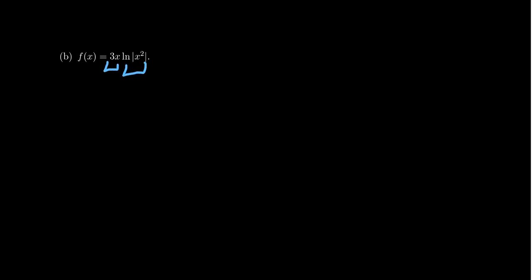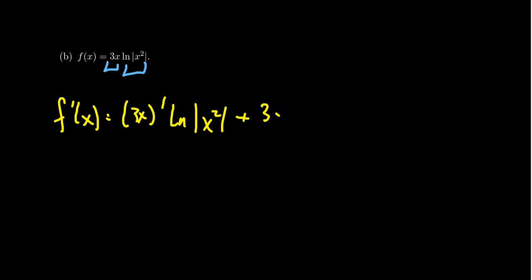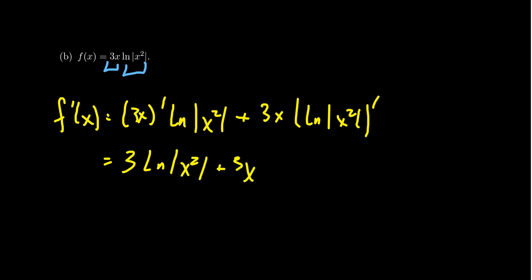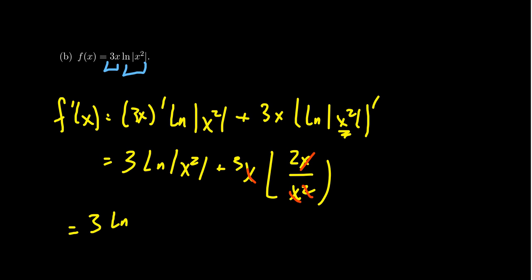Let's take f(x) equal to 3x times the natural log of the absolute value of x squared. Recognizing that we have a product of two functions — 3x and ln|x²| — we can use the product rule. We get f prime equals (3x)′ times ln|x²| plus 3x times the derivative of ln|x²|. The derivative of 3x is 3, giving 3 times ln|x²|. For the second piece, because the absolute value inside the logarithm makes no difference, it's still 2x over x squared — where x squared is the original inside function and 2x is its derivative in the numerator. Simplifying, an x cancels, and we rewrite this as 3 times ln|x²| plus 6.